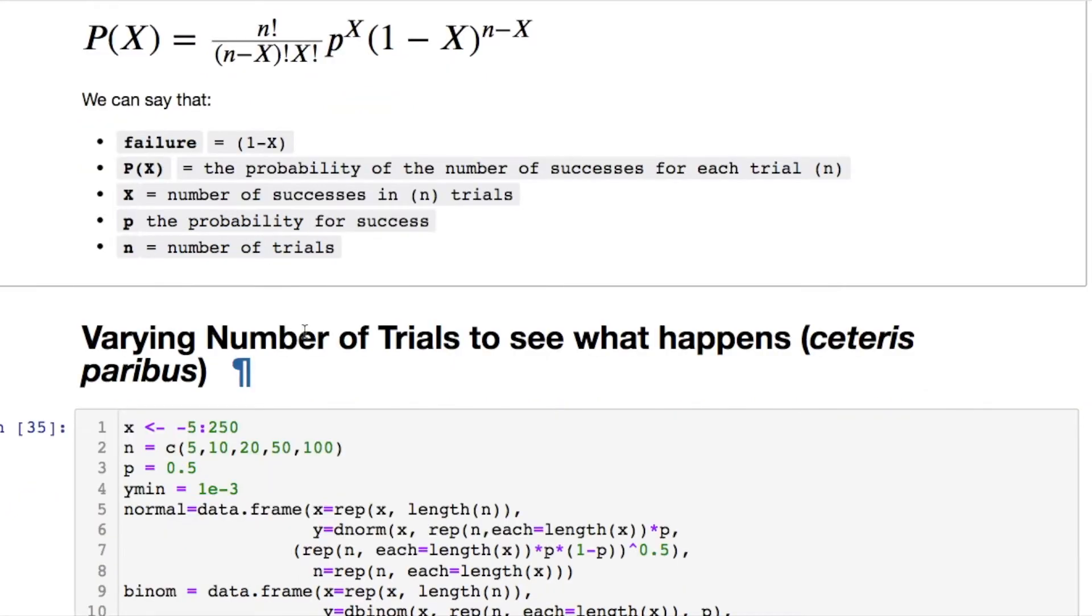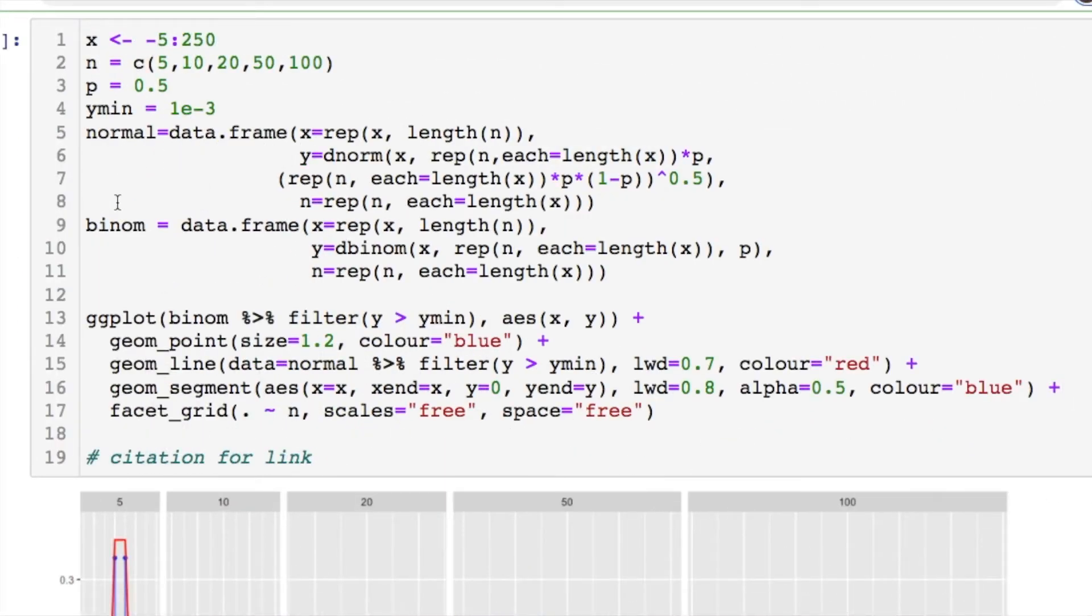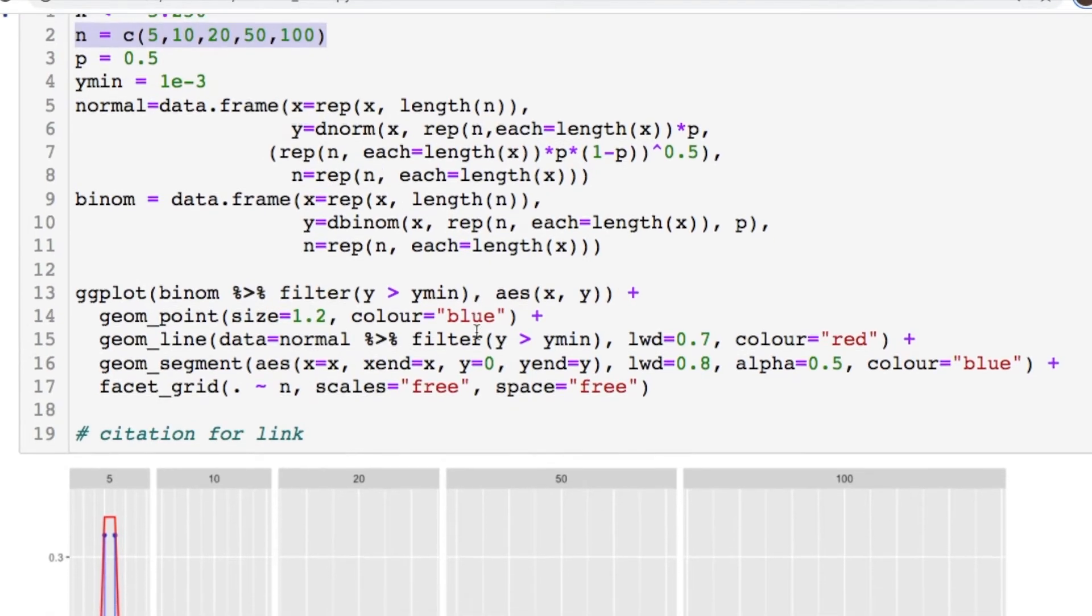Now let's see what happens when we vary the number of trials, keeping everything else constant. That's what ceteris paribus means. We're gonna have the probability of 0.5 and we're gonna vary the number of samples we're gonna have for each trial. And let's see what happens.